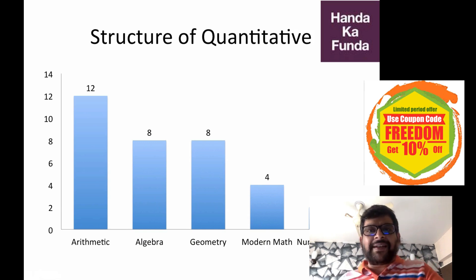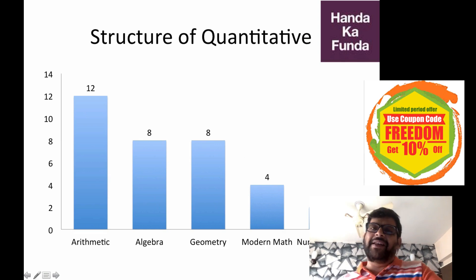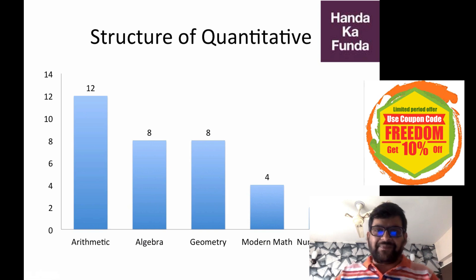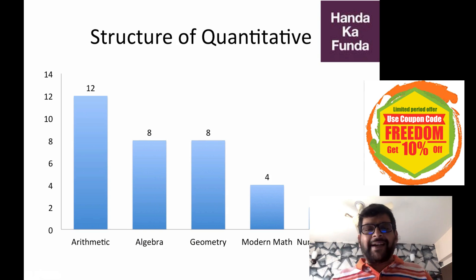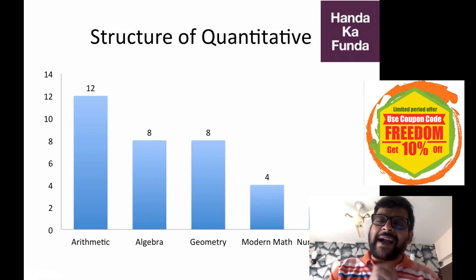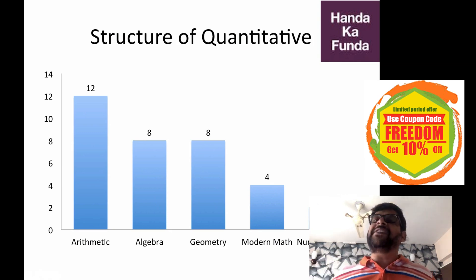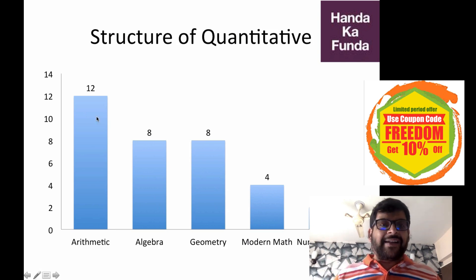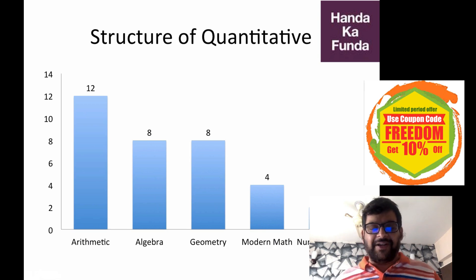If you look at the structure of Quantitative, you can more or less predict where the questions are going to come from. Over the last few years, arithmetic has given the most questions — on average 12. Algebra and geometry have given eight questions out of 34. Modern Maths four, and number system typically has two questions. Since CAT 2017 and 2018 papers were available in the public domain, I categorized them by exact topic, combining all four papers to get an overall picture of which chapters are most important.